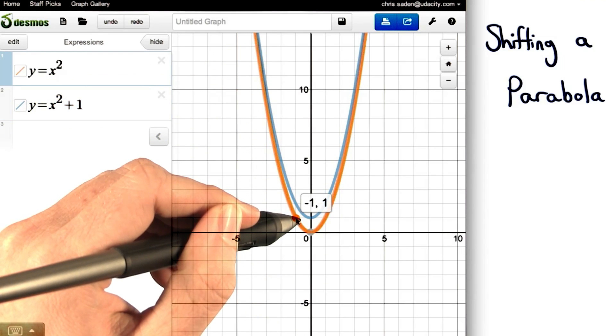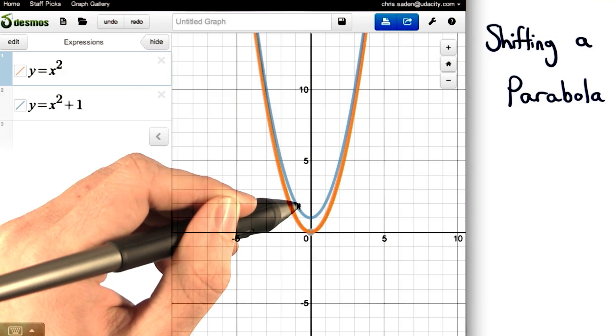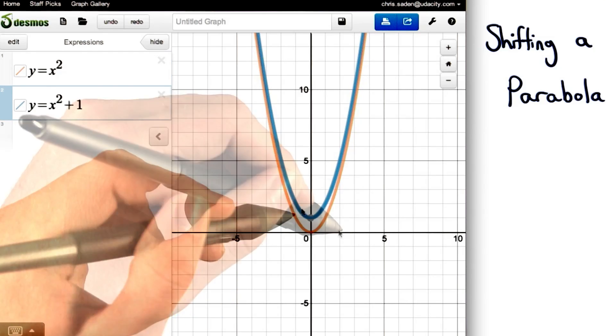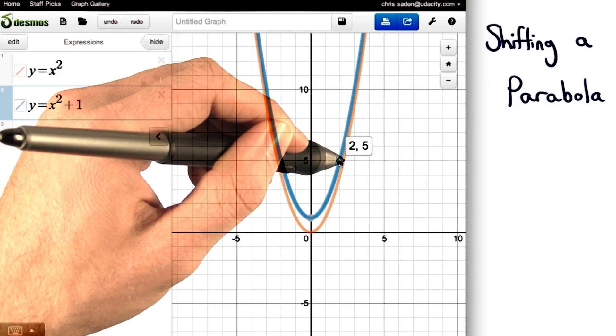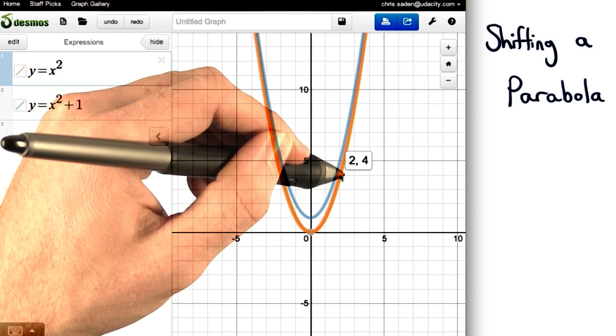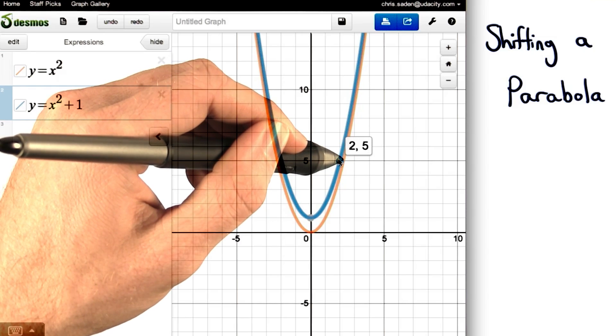So, a point that was at negative 1, 1 is now at negative 1, 2. And a point that was at 2, 4 is now at 2, 5. Notice how the y value increased by 1.